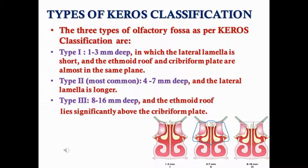In Type 2, which is the most common, the olfactory fossa is approximately 4 to 7 mm deep and the lateral lamella is longer. In Type 3, it is 8 to 16 mm deep and the ethmoid roof lies significantly above the cribriform plate, as shown in the figure.